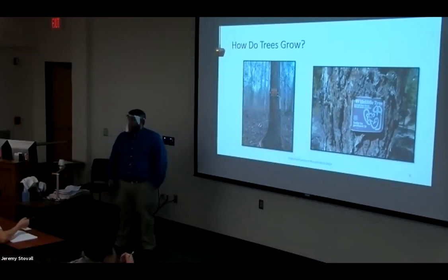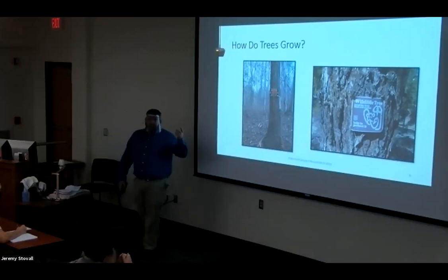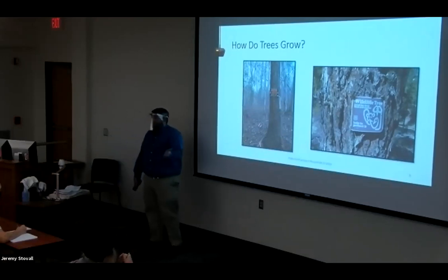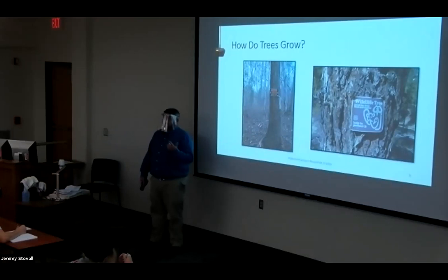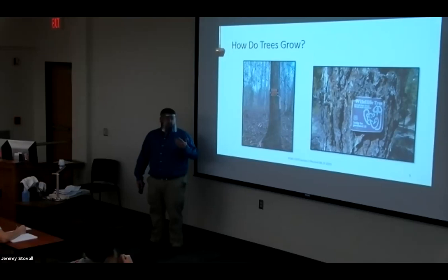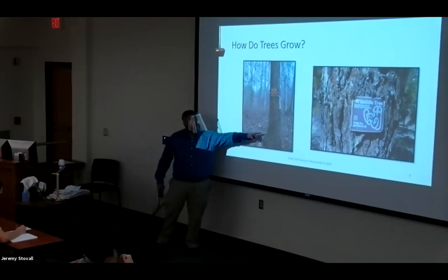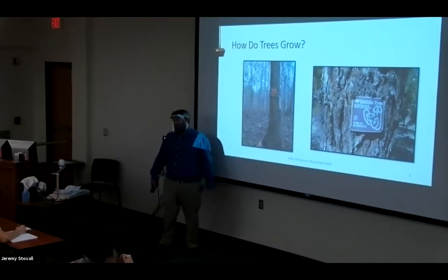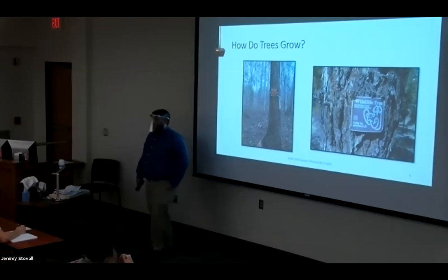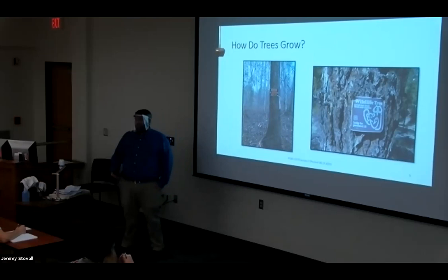Trees grow from the top up. Grass, you have to keep mowing because it grows from the bottom up — it's got a basal meristem. With trees, that's fortunate. Otherwise fencing and signage would be a big hassle if they had a basal meristem. So they grow from the top.